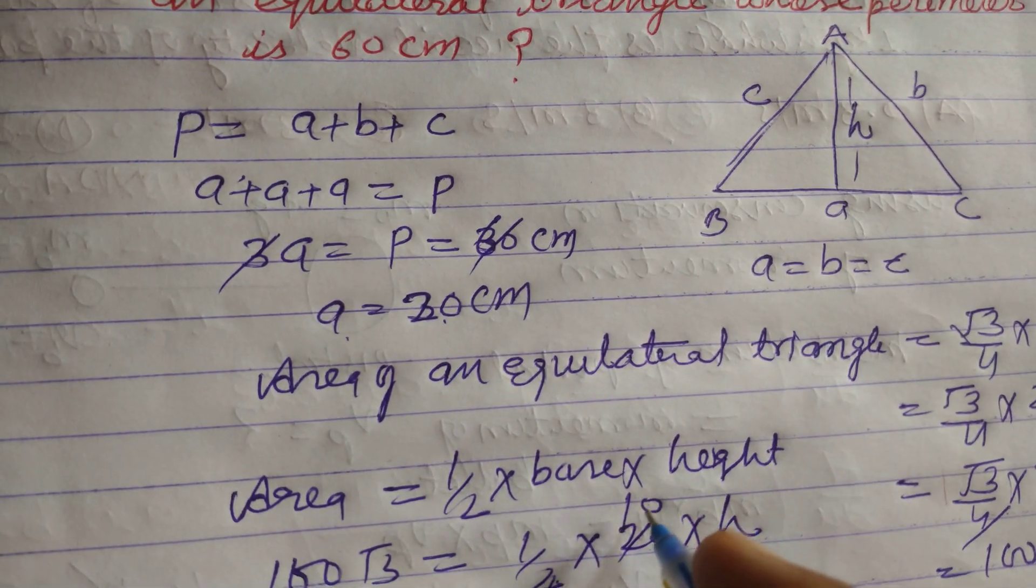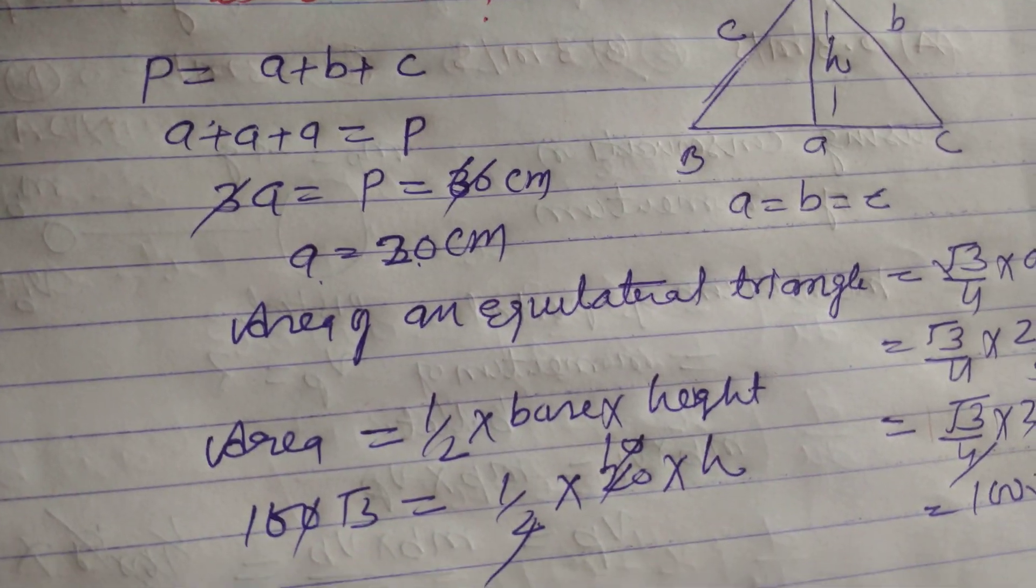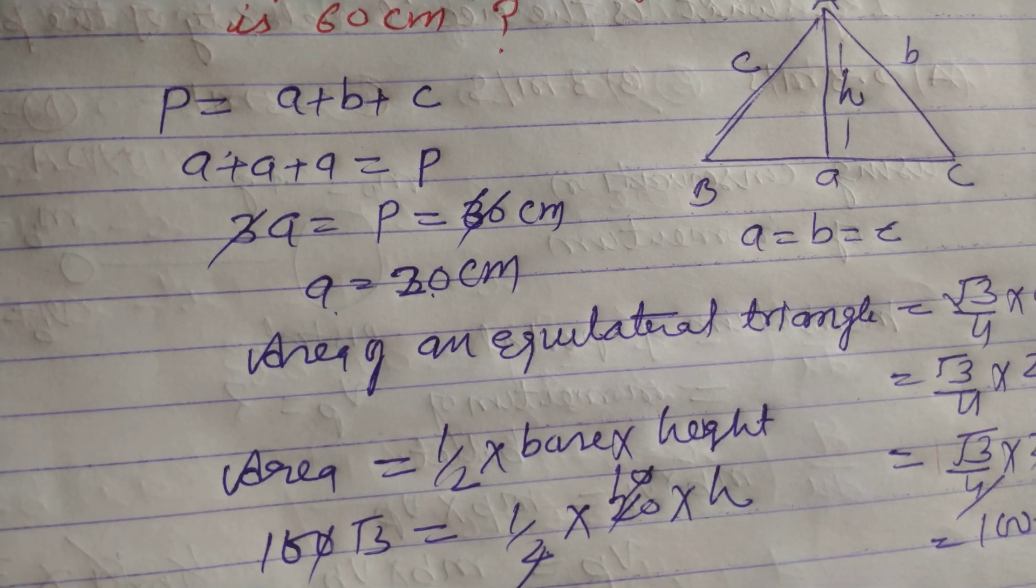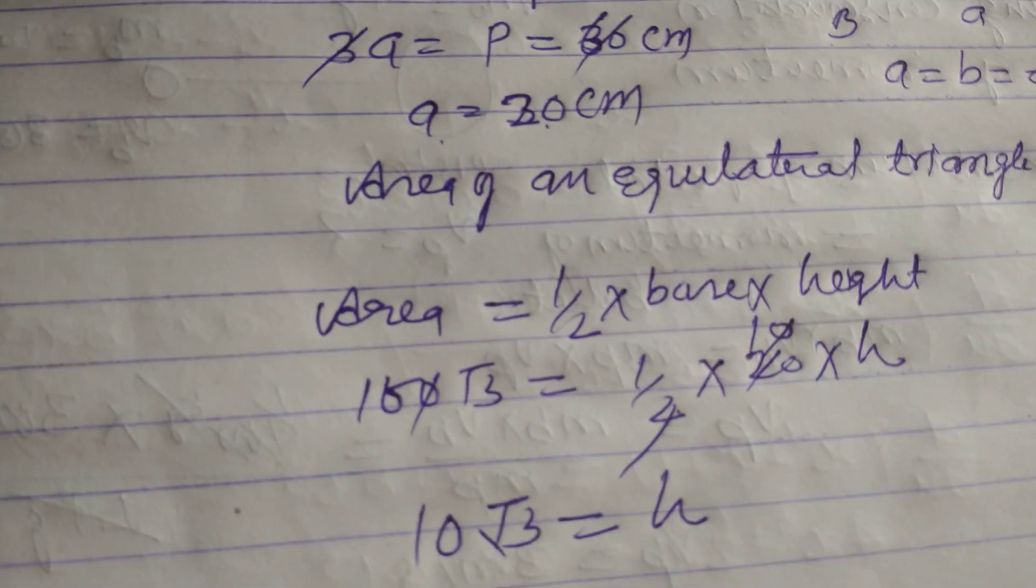So this is 10, and 10 is cancelled, so we got 10 square root 3 is the height of the equilateral triangle.